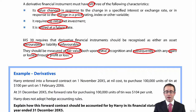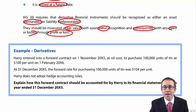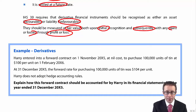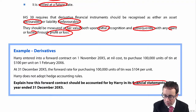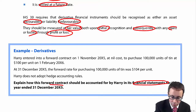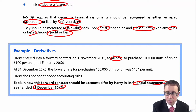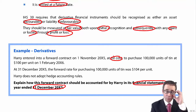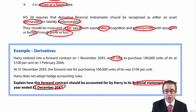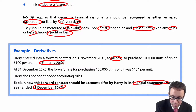Let's go through the example and see how we get on. The question wants us to explain how the contract should be accounted for by Harry in its financial statements — the statement of profit or loss and statement of financial position for the year ended December 20X5. Harry entered into a forward contract on the 1st of November 20X5, within the financial year, at nil cost.